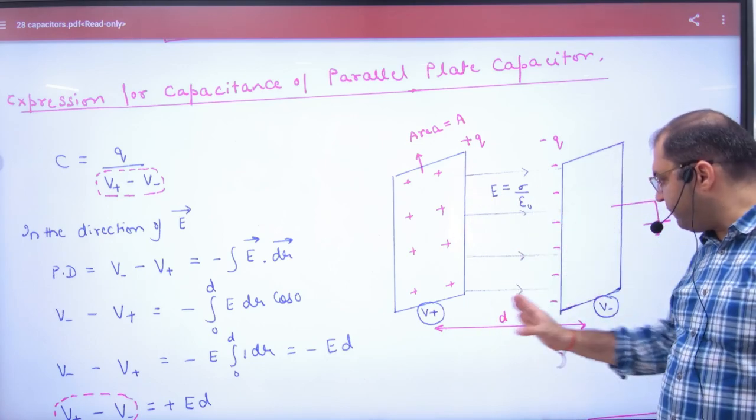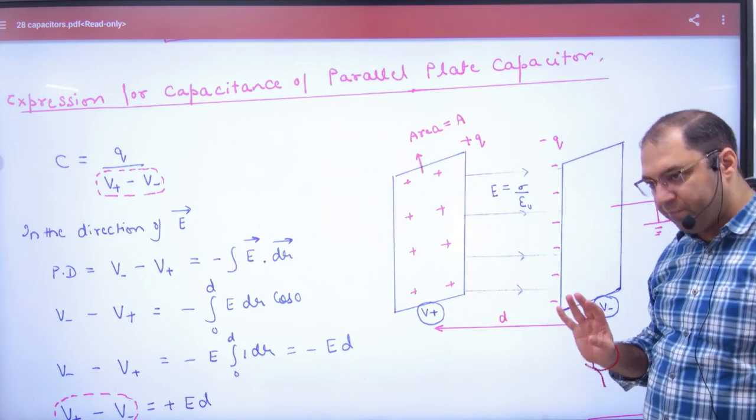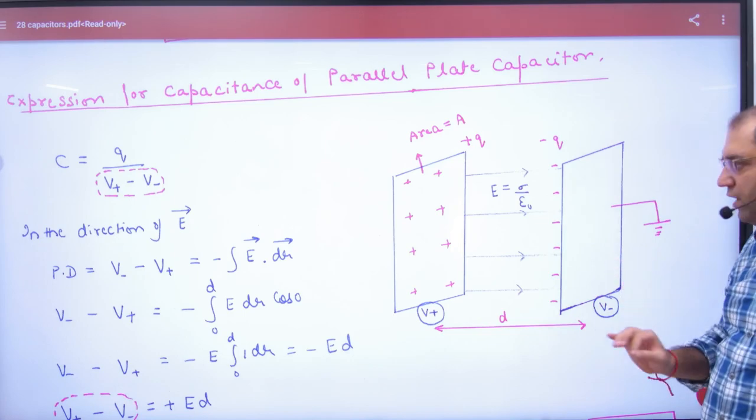The plates are distance d apart. Positive potential is V+ and on this plate, negative potential is V-.